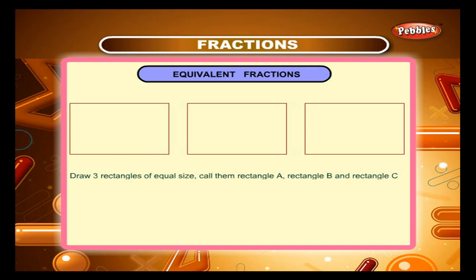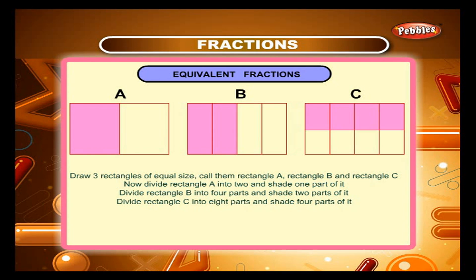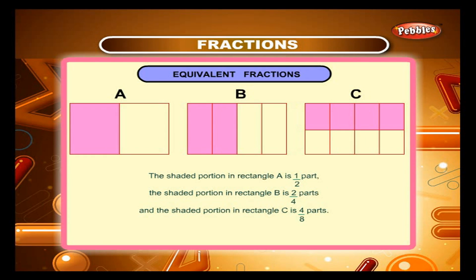Example: Draw three rectangles of equal size — rectangle A, rectangle B, and rectangle C. Divide rectangle A into 2 parts and shade 1. Divide rectangle B into 4 parts and shade 2. Divide rectangle C into 8 parts and shade 4. The shaded portions are 1/2, 2/4, and 4/8 respectively. We see that 1/2 = 2/4 = 4/8, so 1/2, 2/4, and 4/8 are equivalent fractions.